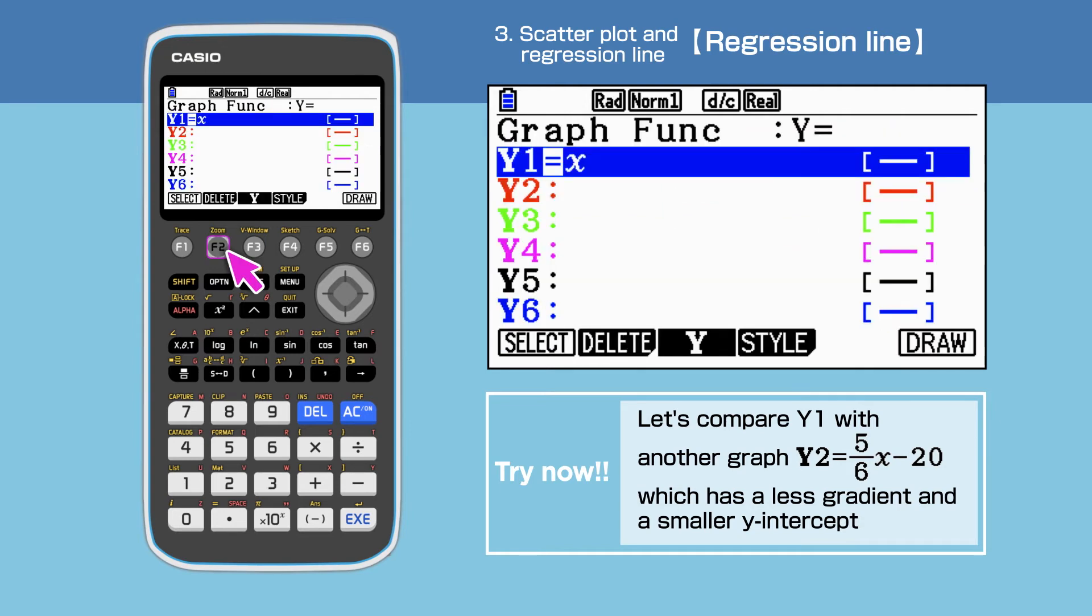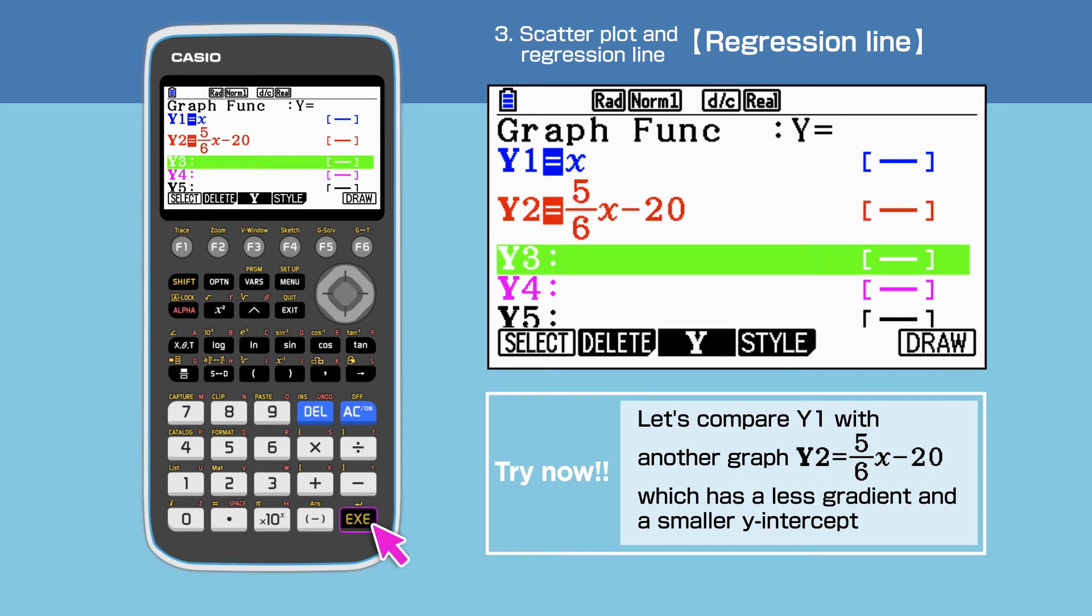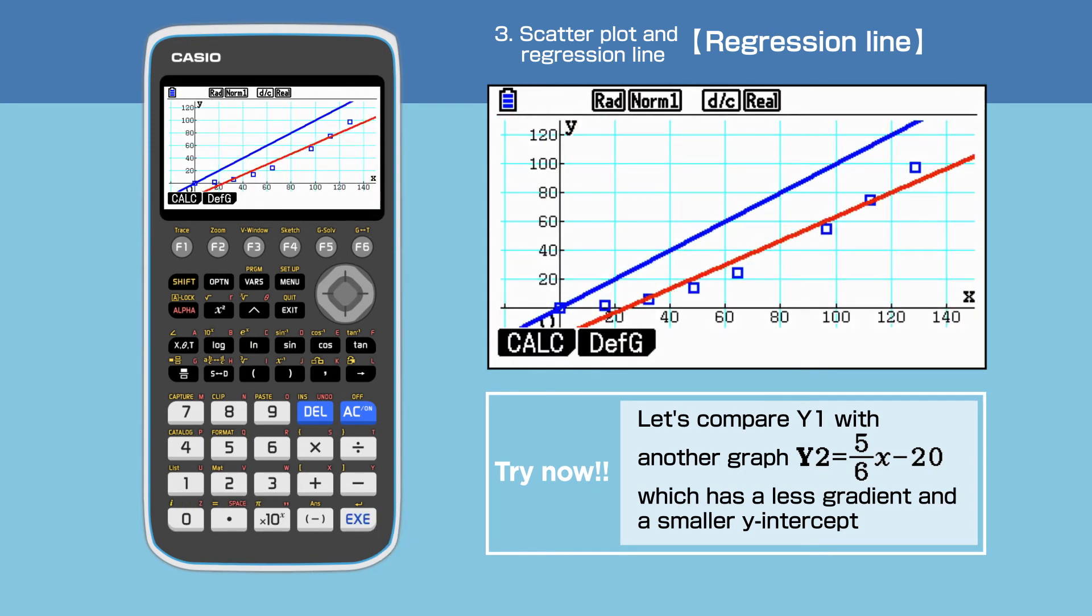Press F6 to draw. We have the second graph shown in red, which shows to be a better fit than the blue line.